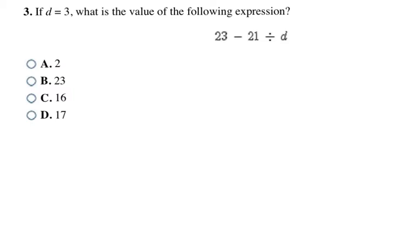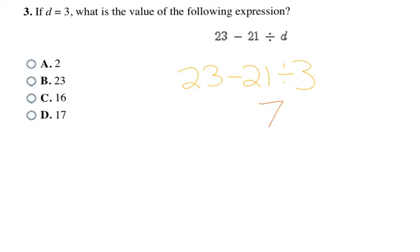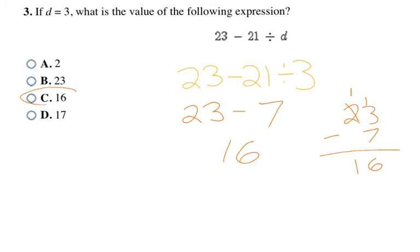In this problem, D is going to be 3. Rewriting the expression with 3 in place of D, I have 23 − 21 ÷ 3. I have subtraction and division, so I always do division before subtraction. 21 ÷ 3 = 7, leaving 23 − 7. Working that out, 23 − 7 = 16, which is the final answer, choice C.